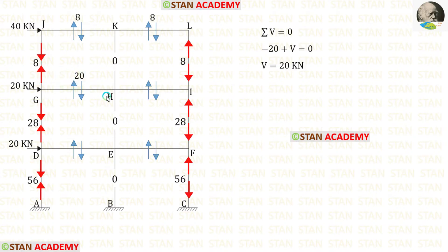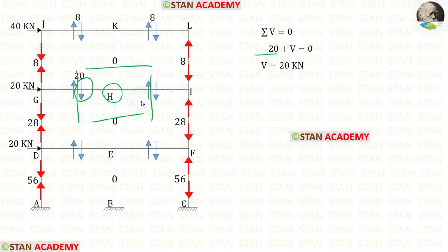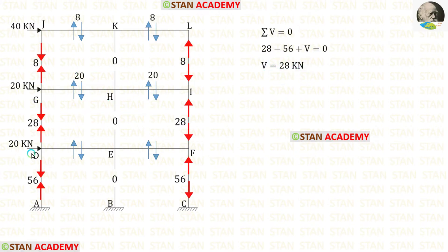Now let us take joint H. This force is acting downwards, so that will be negative. This force is acting upwards, so that will be positive. Finally, for V we are getting 20 kN.